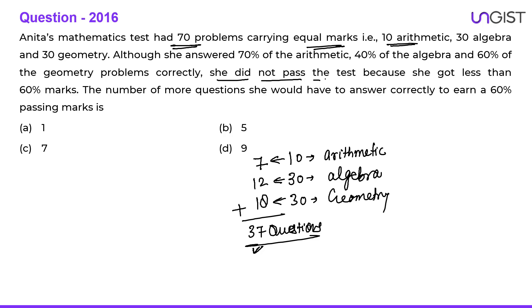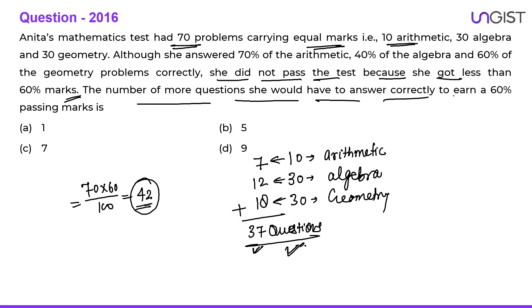She did not pass the test because she got less than 60 percent marks. The total passing marks are 60 percent of 70, which is 42. She should have scored 42 questions correctly but she answered only 37 correctly. The number of more questions she should have answered correctly to earn 60 percent passing marks is 42 minus 37, which is 5 more questions. B option is the correct choice.